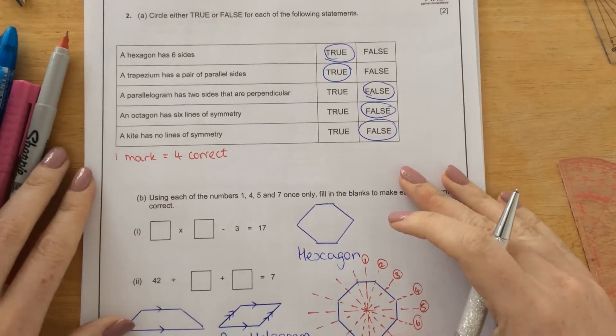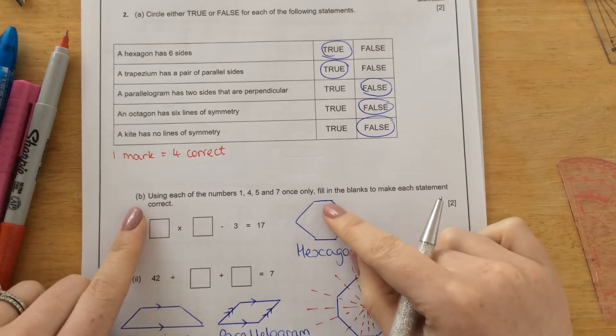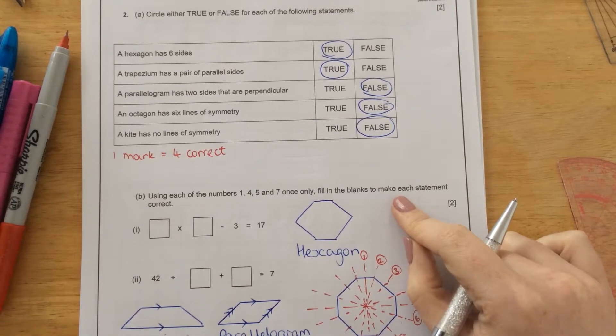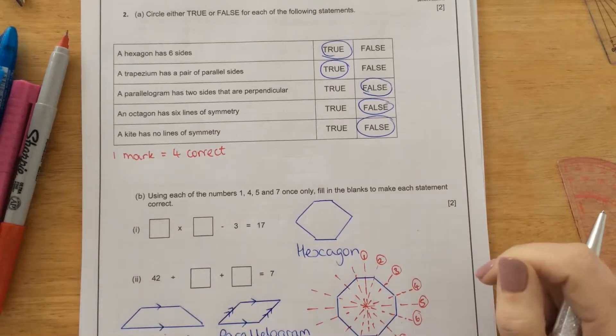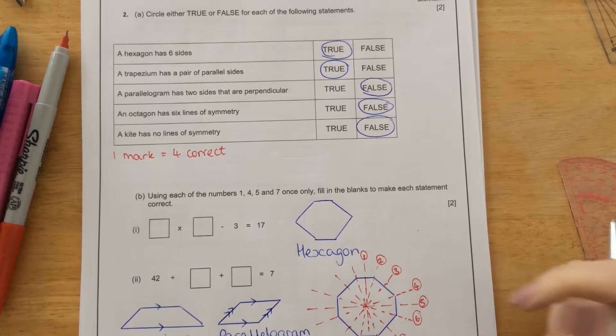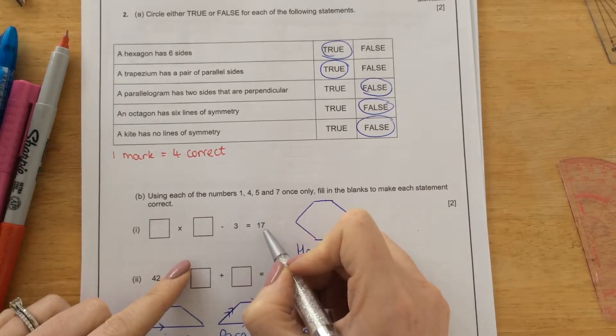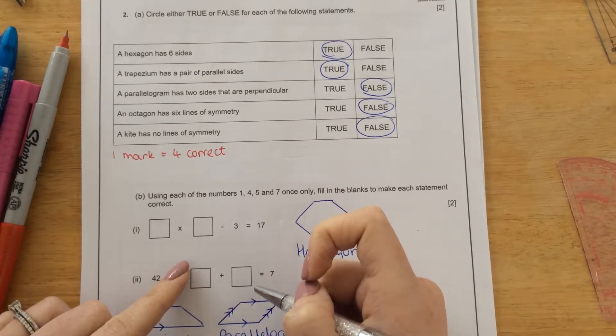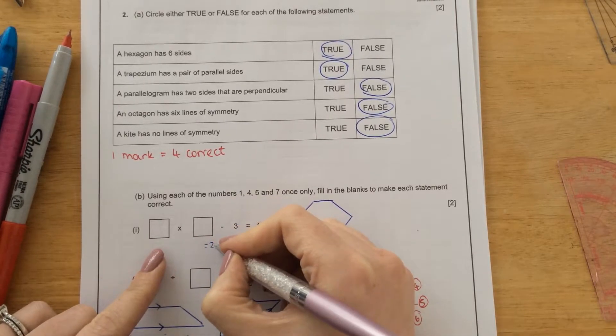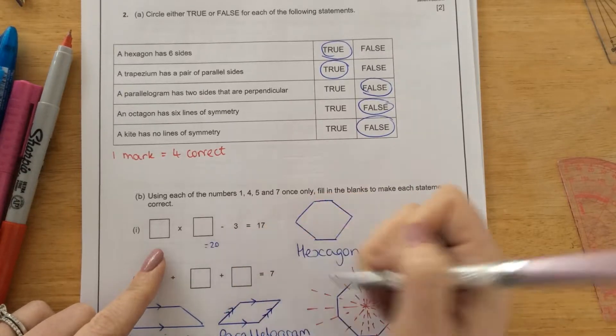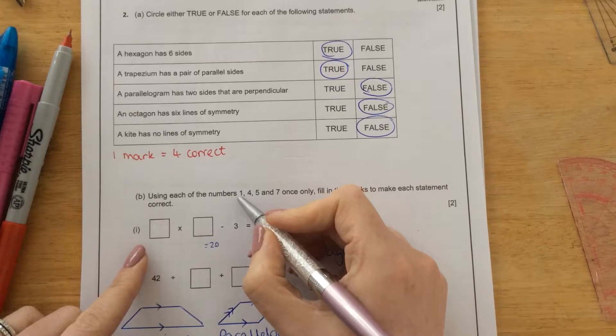Part B. Using each of the numbers 1, 4, 5, and 7 once only, fill in the blanks to make each statement correct. So something times something, take away 3, equals 17. So the trick here is to change that take away 3 to an add 3 to give you 20. So then we're saying something times something equals 20, and then take away 3 would be 17.